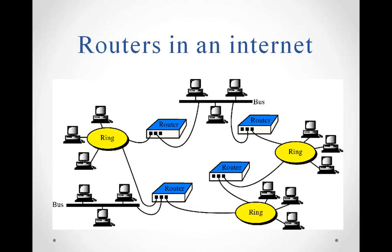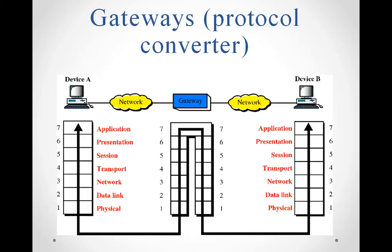Gateways are basically called protocol converters because they provide conversion for all seven layers of the OSI model — from the source device to the destination computer system — and operate between these two devices.